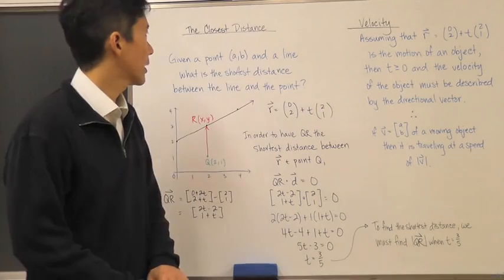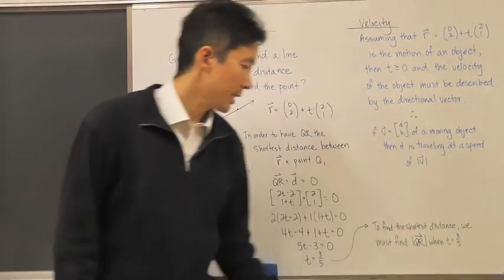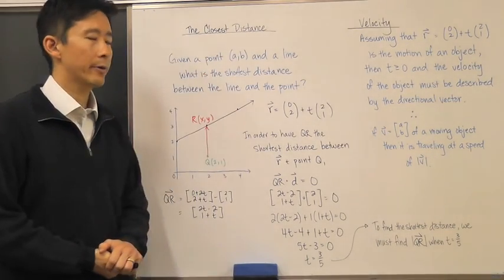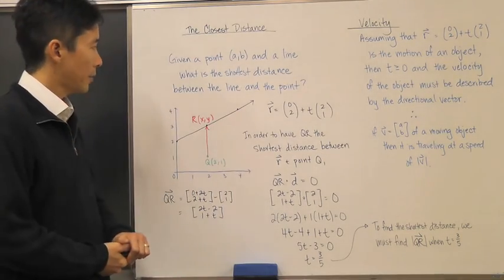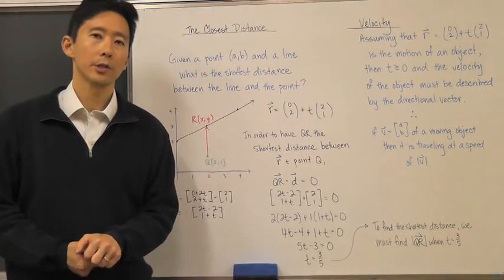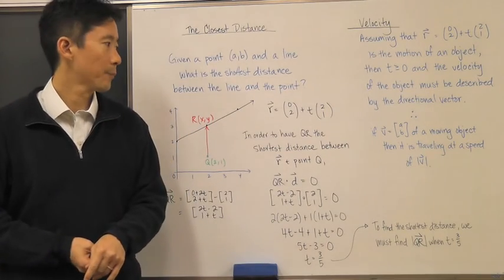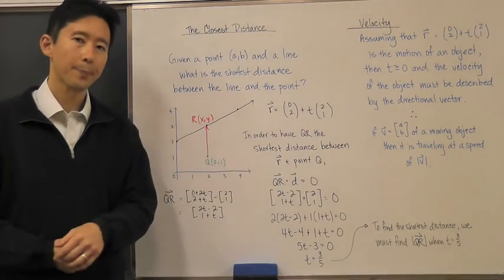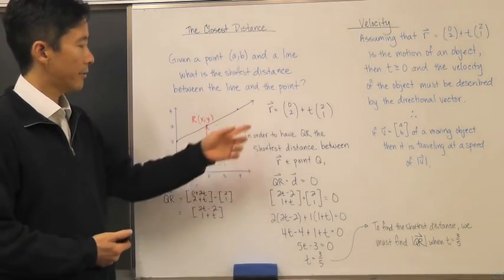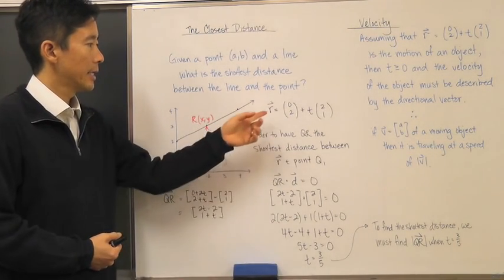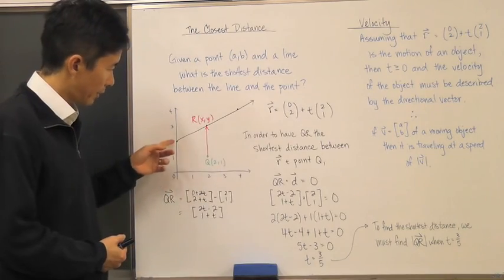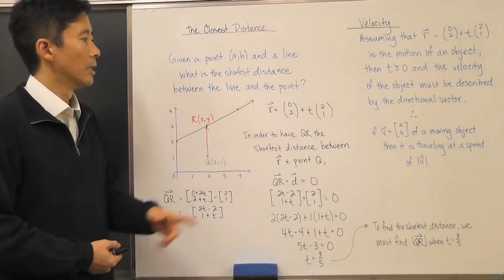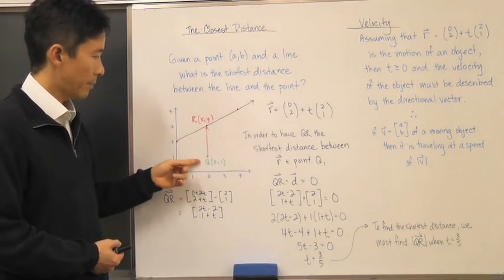Let's take a look at the closest distance and velocity. If you're given a point A, B and a line, what is the shortest distance between the point and the line? Here I have a point Q and a black line. The vector form of that black line is r equals (0, 2) plus t times the directional vector (2, 1). This is the vector equation of the line.